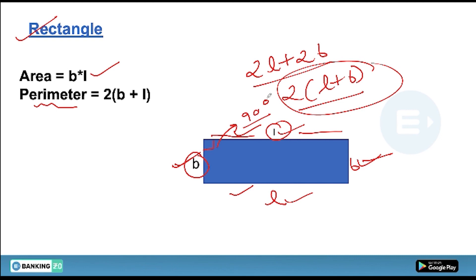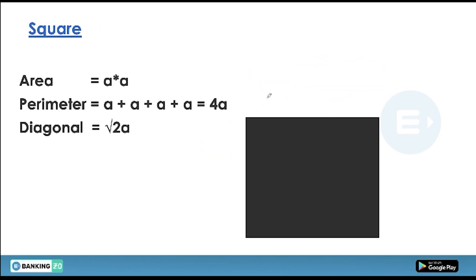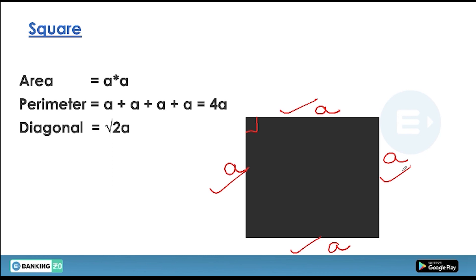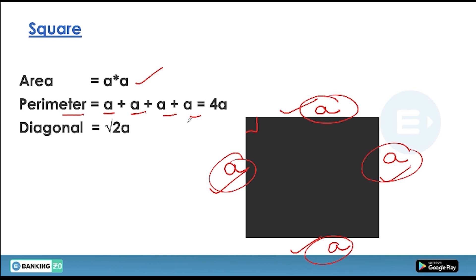Next is the square. A square is a type of rectangle where all four sides are equal and all angles are 90 degrees. If each side is 'a', then the perimeter is just the sum of all boundaries: a + a + a + a = 4a, or simply four times the side.